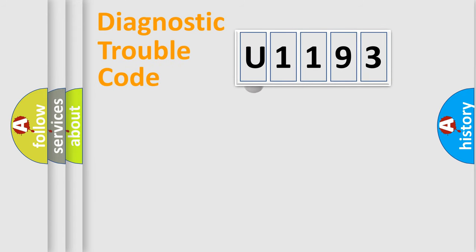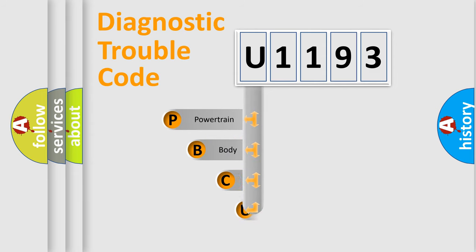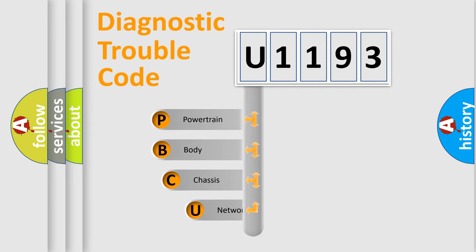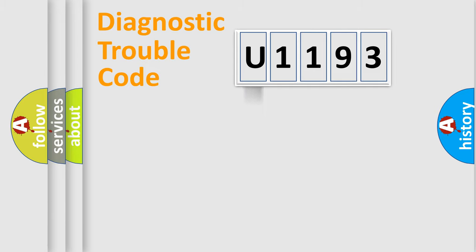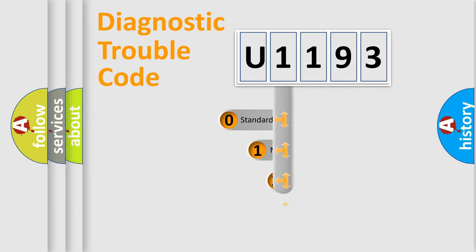First, let's look at the history of diagnostic fault code composition according to the OBD2 protocol. We divide the electric system of an automobile into four basic units: powertrain, body, chassis, and network. This distribution is defined in the first character of the code.